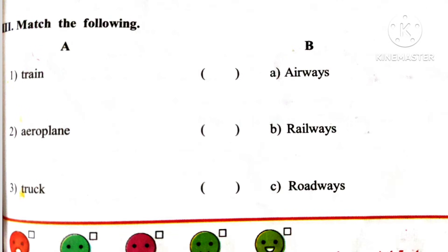Roman number 3: Match the following. Train — Answer B: Railways. Aeroplane — Answer A: Airways. Truck — Answer C: Roadways.